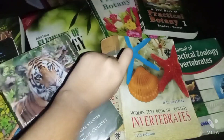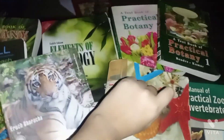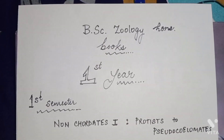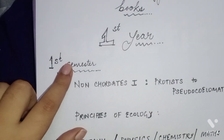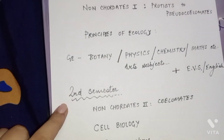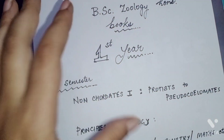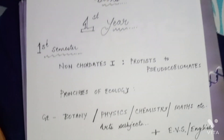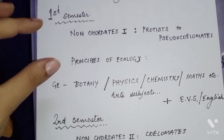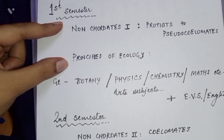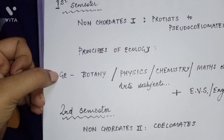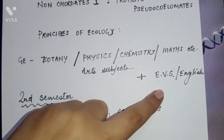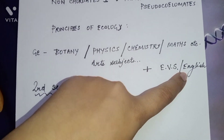Let's move on to which books we should use for which subject. We will talk step-wise about first year — first and second semester — for theory and practical papers, which books are recommended. Mainly there are two core subjects, there is a GE (general elective), and plus extra subjects: EVS and English.